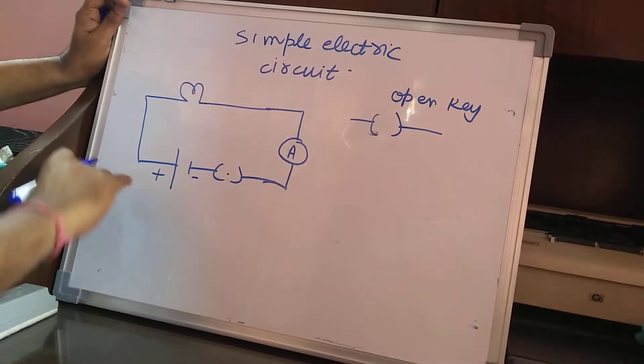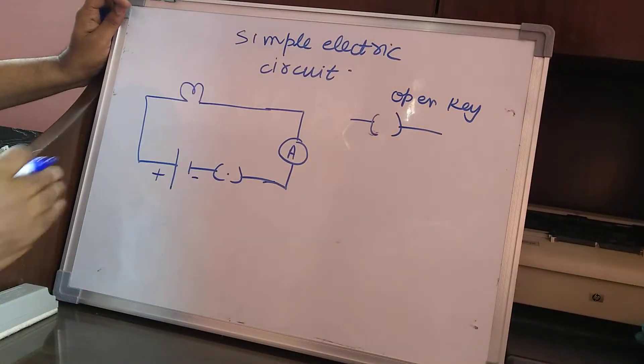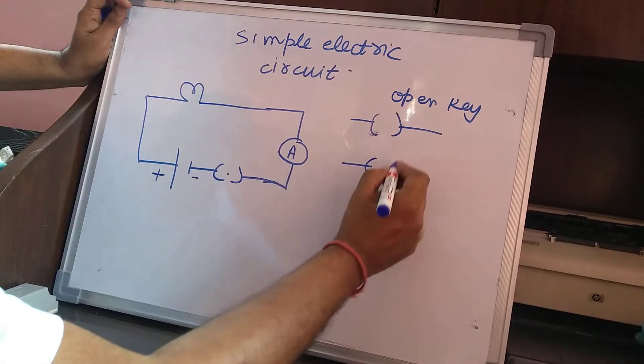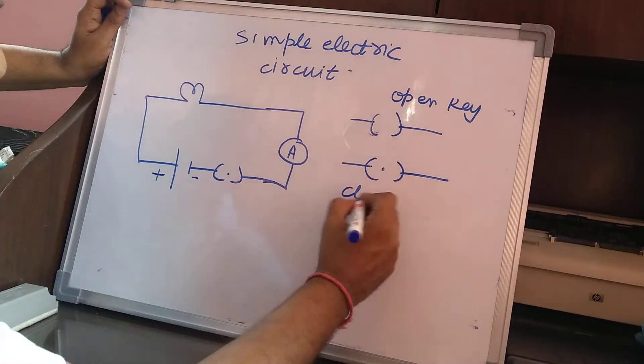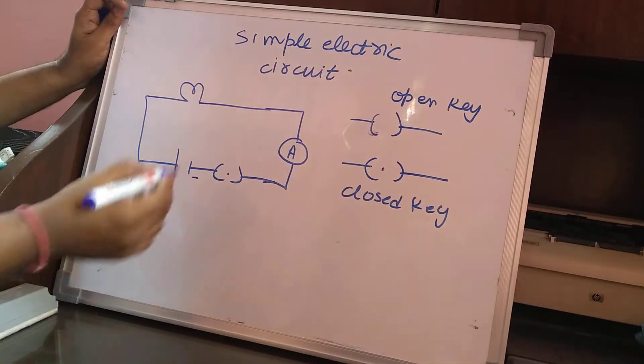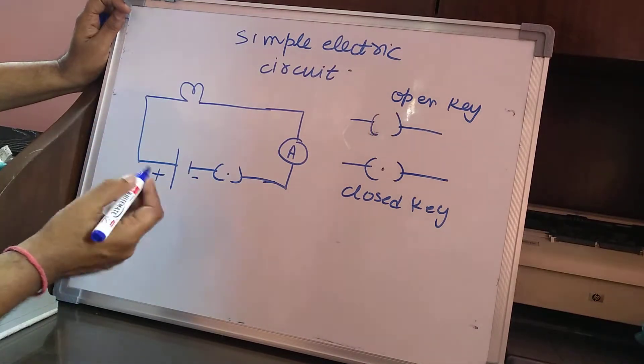An open key shows that the path is not complete. Current needs a closed path to flow, and a closed key is represented like this. So this is a closed key. When the key is closed, the path is complete, so electric current can flow.